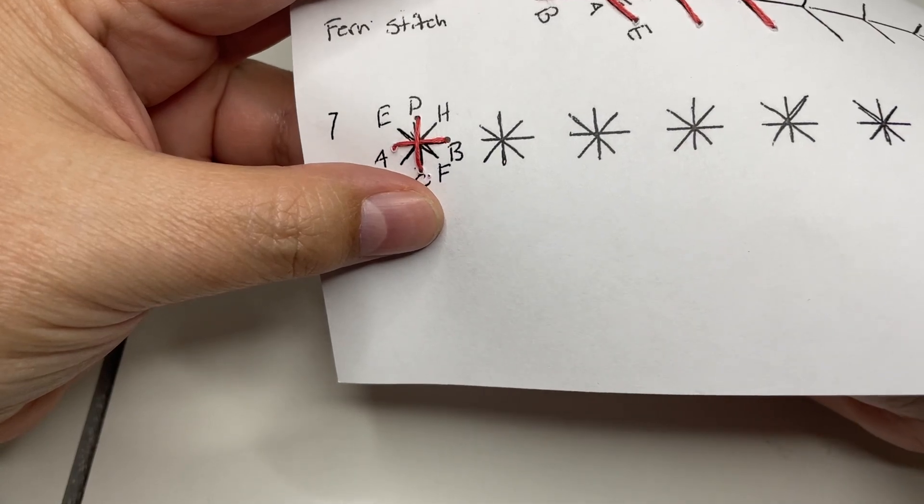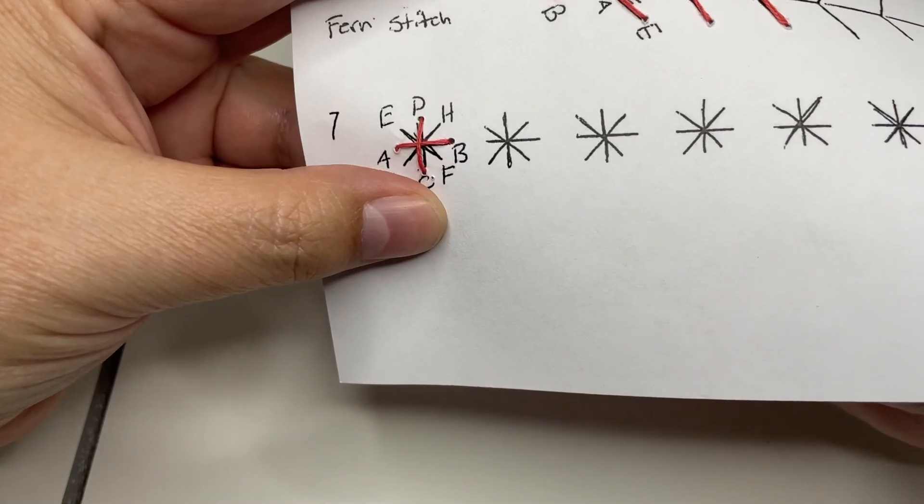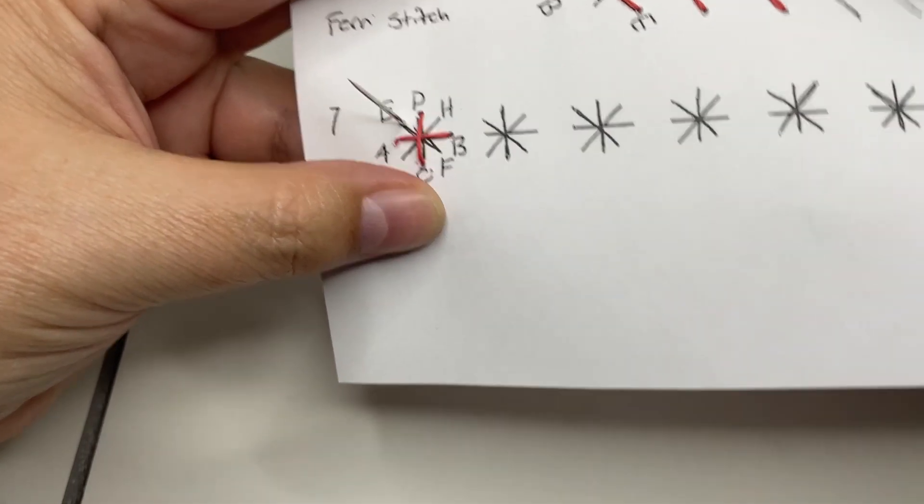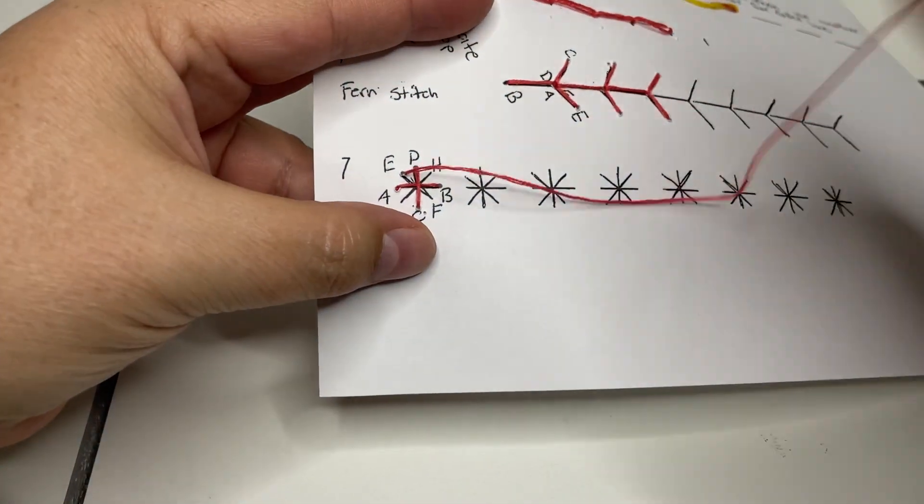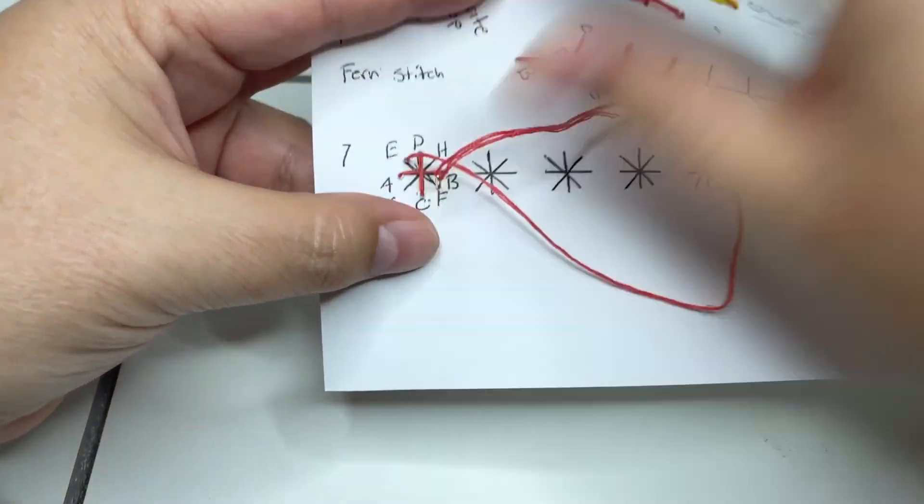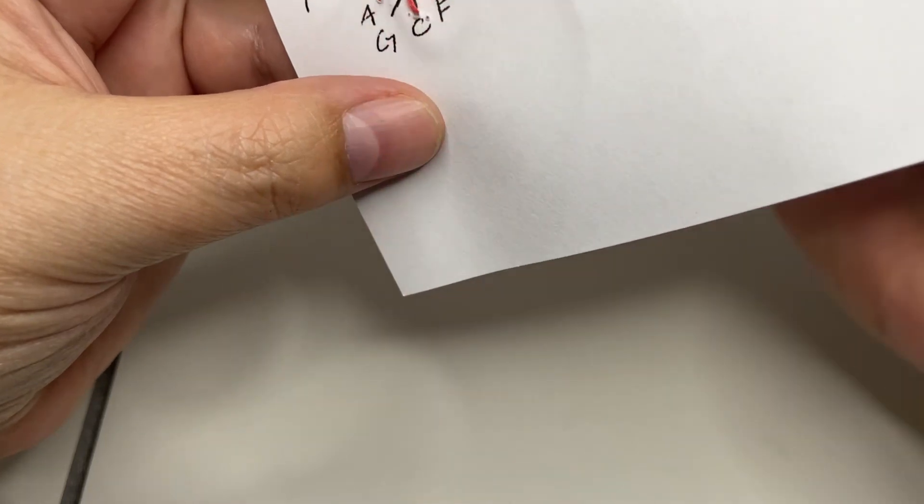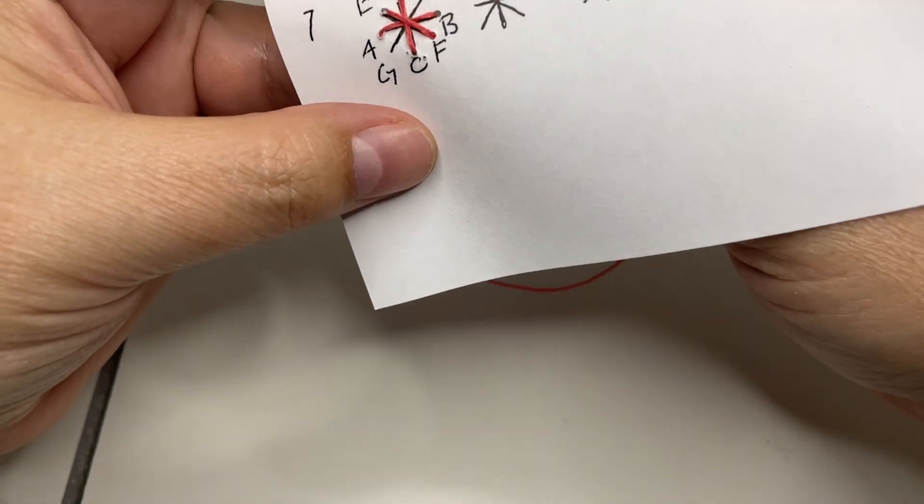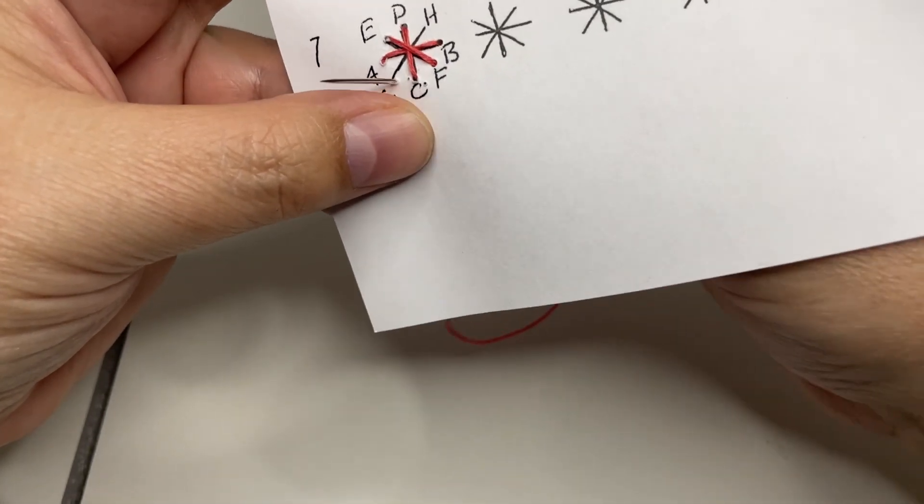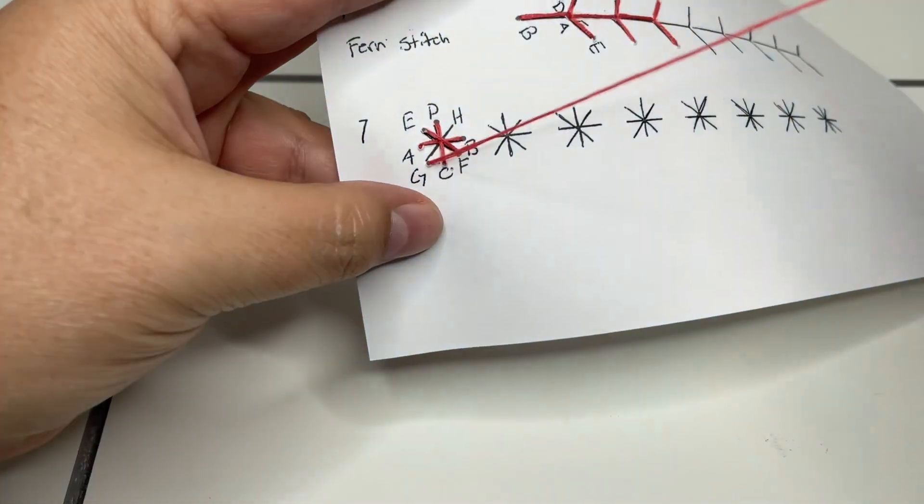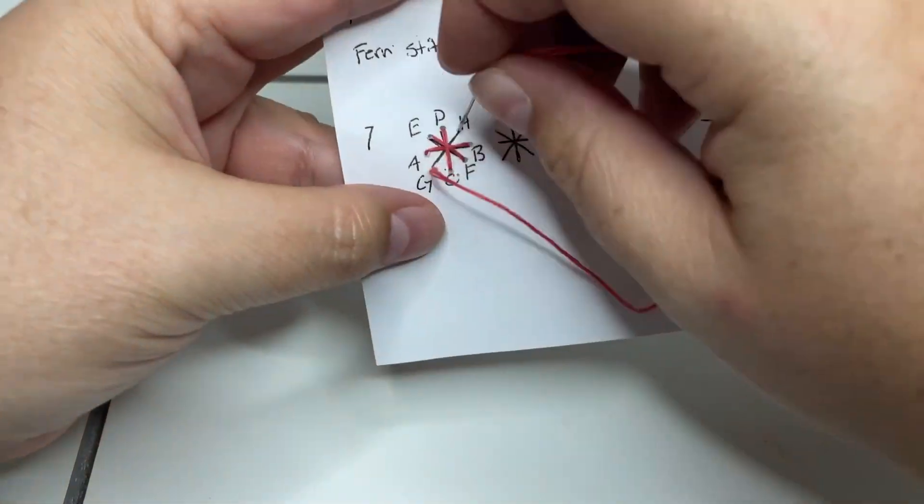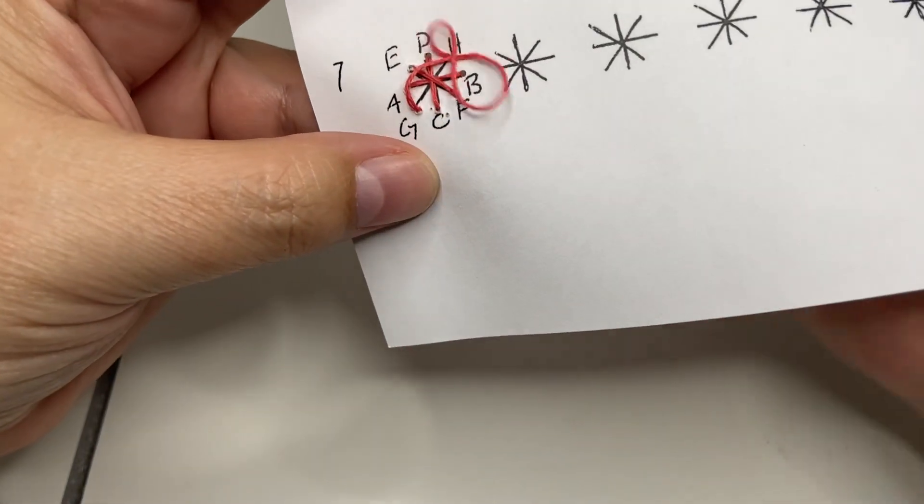And we're going to come up through E, then down through F, then up through G - I'm going to go backwards, I'm going to do G and then H. So as you can see, it's just a variation on a cross stitch and a running stitch. It all just kind of makes this star.